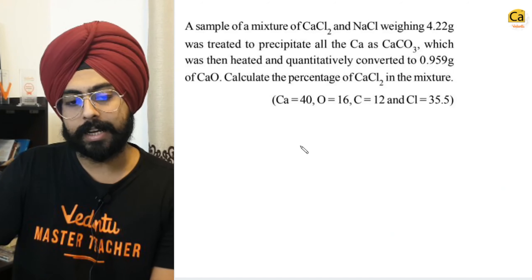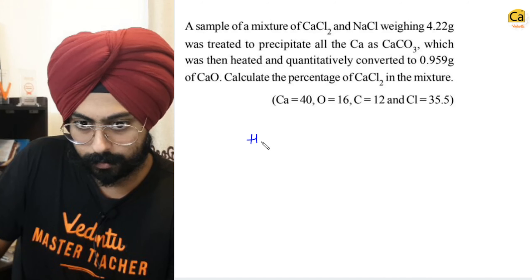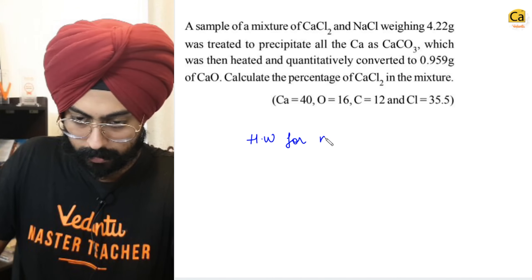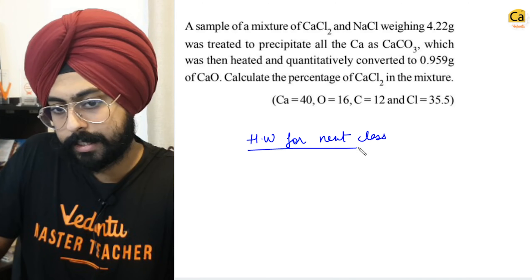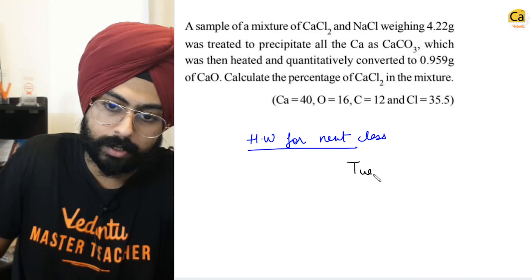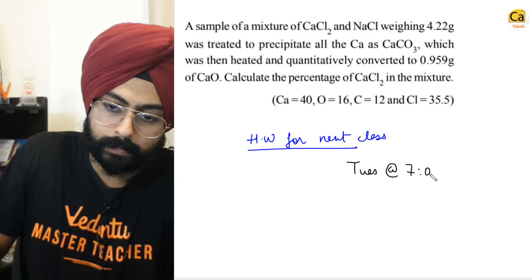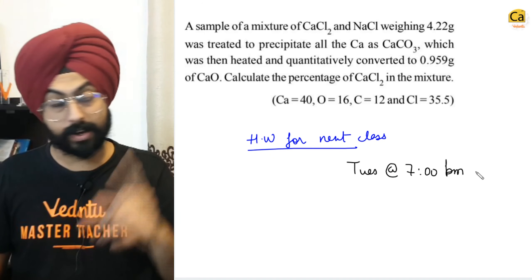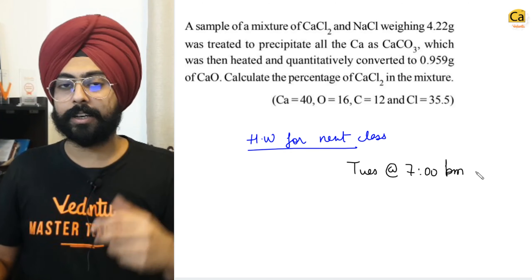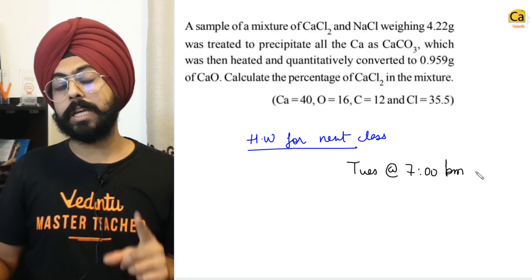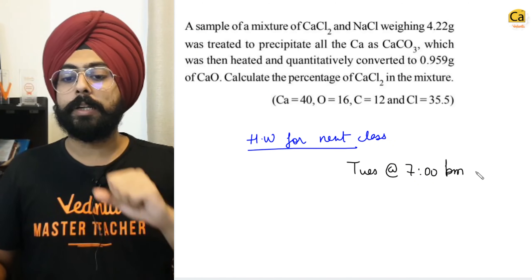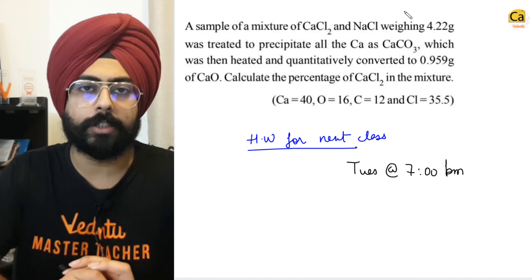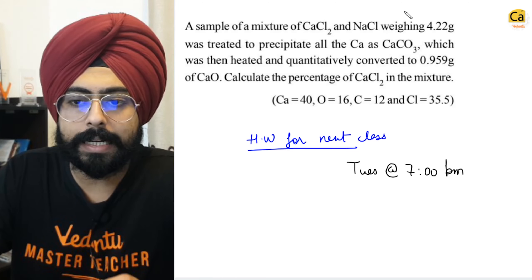Now comes the time for the homework for the next class. The next class is going to happen on Tuesday at 7 pm, and in that class we will learn about the equivalent concept — very, very important for further chapters like redox reactions and ionic equilibrium.